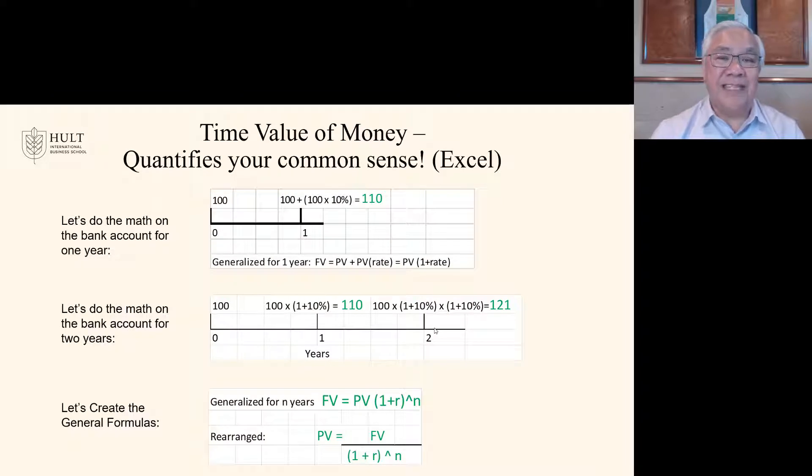So first let's do one year, the easy one. This is a timeline. Time zero means today. Time one means a year from now. A hundred dollars today is worth a hundred plus the interest of a hundred times 10 or 110. You probably knew that without me going through this elaborate explanation.